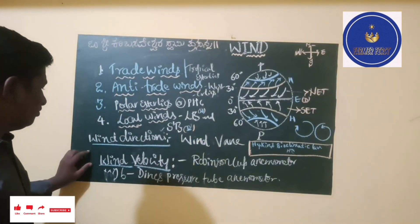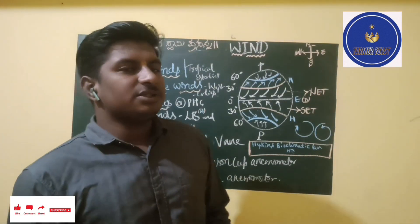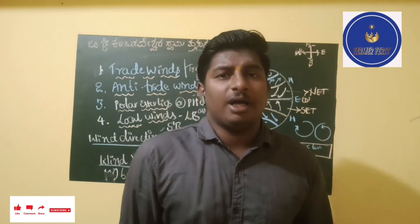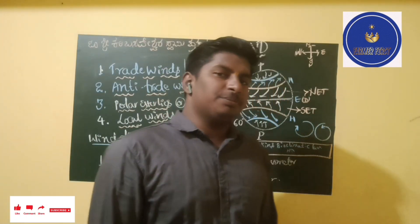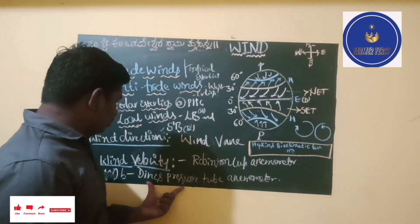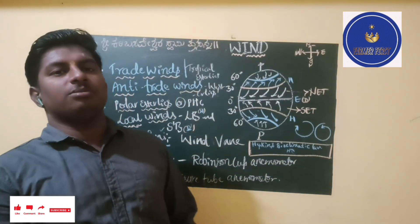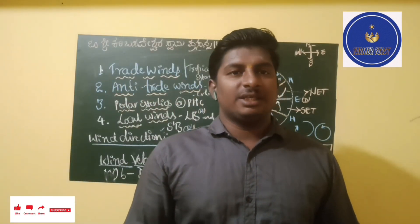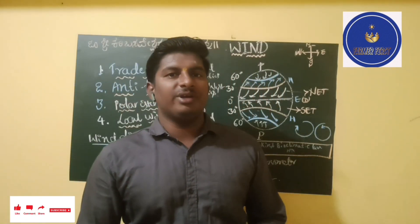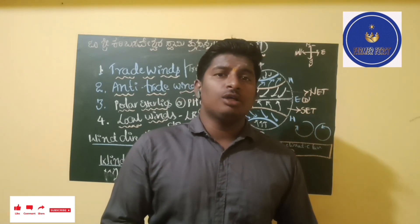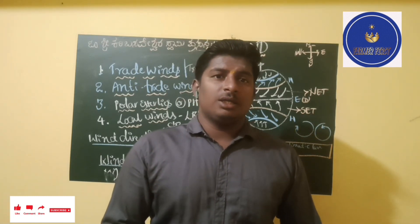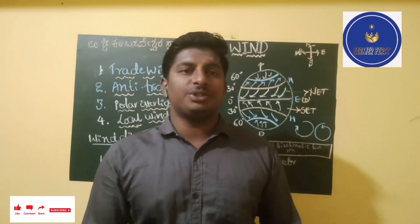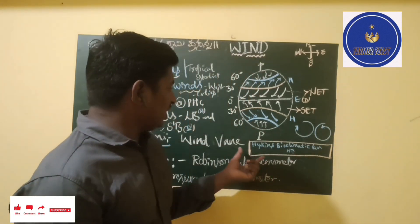Wind velocity can be measured using the Robinson cup anemometer. In observatories, we use the Dines pressure tube anemometer. Wind velocity and wind direction also decide the movement of clouds and the rate of rainfall, hence it is very important to study these two topics.